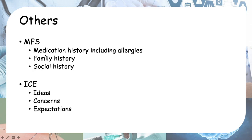The other components are MFS: medication history including allergies, family history — whether any family members have similar conditions, which may be genetically related or even infectious — and social history. For social history, ask if the child is going to school and how they are doing, and draw out a family tree to see who is taking care of the baby and who is in the household. Finally, ICE stands for ideas, concerns, and expectations.